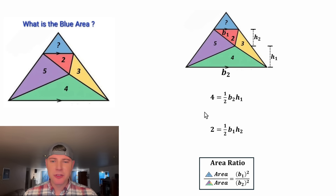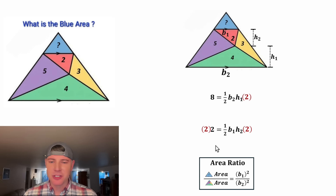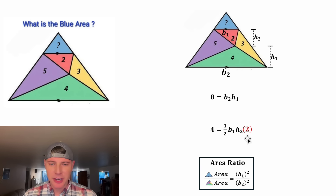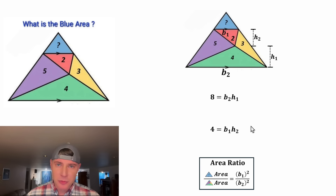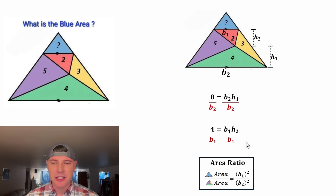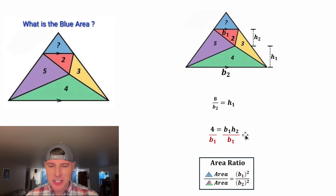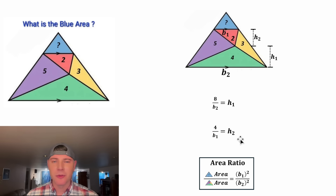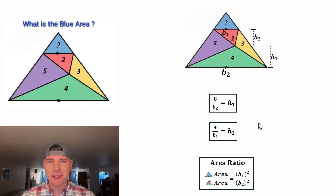To get rid of the one-halves, we can multiply both sides of both equations by 2. On top, 2 times 4 is equal to 8, and down here, 2 times 2 is equal to 4. The one-half times 2 will cancel out on both sides. Ultimately, we're trying to solve for B sub 1 and B sub 2, so let's get these expressed in terms of B sub 1 and B sub 2. Let's divide both sides of the first equation by B sub 2 and both sides of the second equation by B sub 1. The B sub 2's cancel, leaving H sub 1 equals 8 over B sub 2. And the B sub 1's cancel, leaving H sub 2 equals 4 over B sub 1. These two equations look important — let's put a box around them.